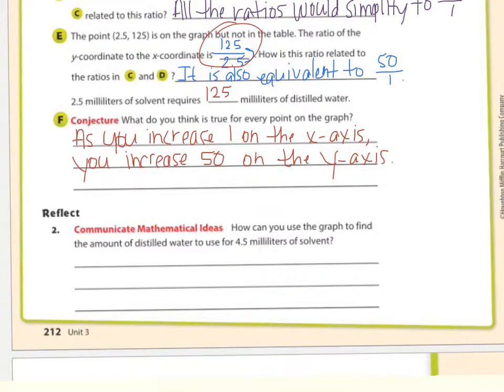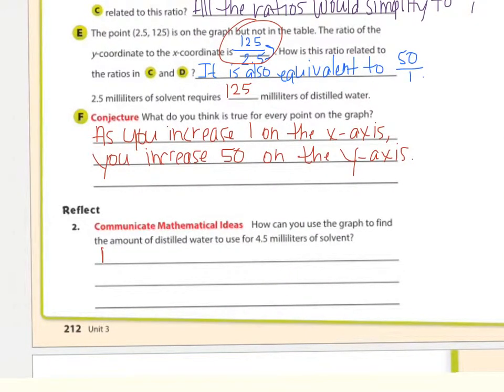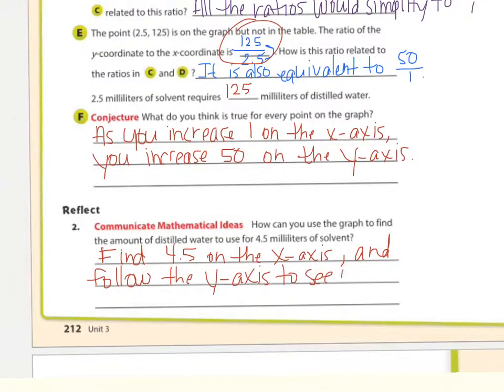How can you use the graph to find the amount of distilled water to use for 4 and a half milliliters of solvent? You find 4 and a half on the X axis and follow the Y axis, and you can see where on the graph they meet, where they touch, where they join, where they intersect.